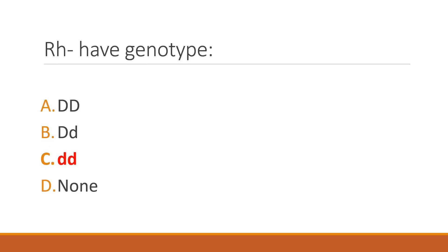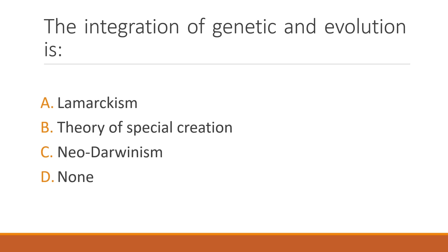The integration of genetic and evolutionary theory is combined in what? The correct answer is option C: Neo-Darwinism, also called the modern evolutionary synthesis, which combines Lamarckism, Mendelism, and Darwinism.